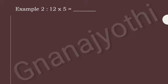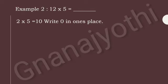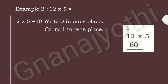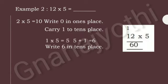Now, look at Example 2: Multiply 12 and 5. First, let us multiply 2 into 5. 2 fives are 10. Write 0 in the ones place and carry 1 to the tens place. Next, multiply 1 into 5. 1 five is 5. Add carry 1 to the 5. If we add carry 1 to the 5, we get 6. Then write 6 in the tens place. Therefore, if we multiply 12 into 5, we get 60.